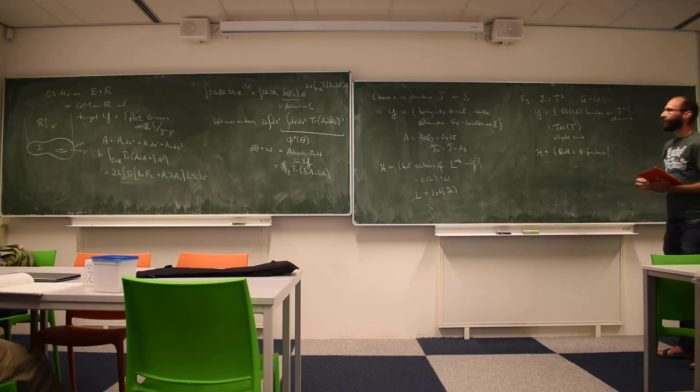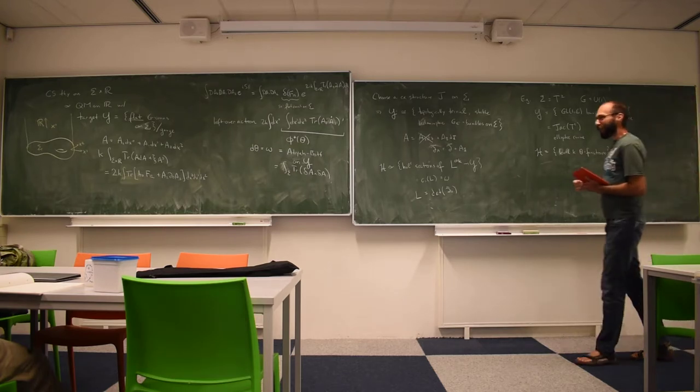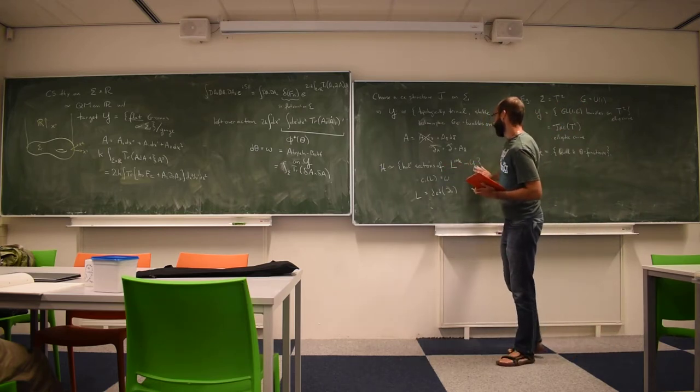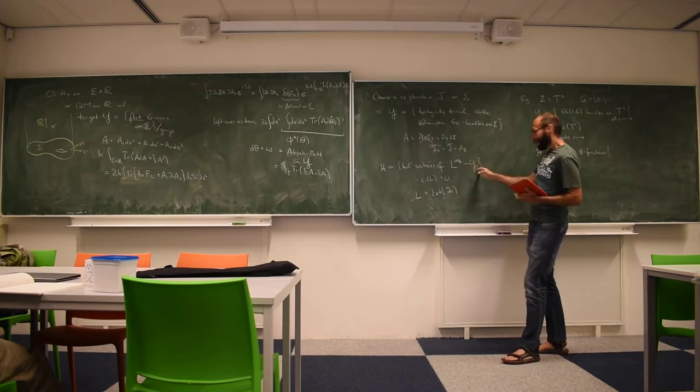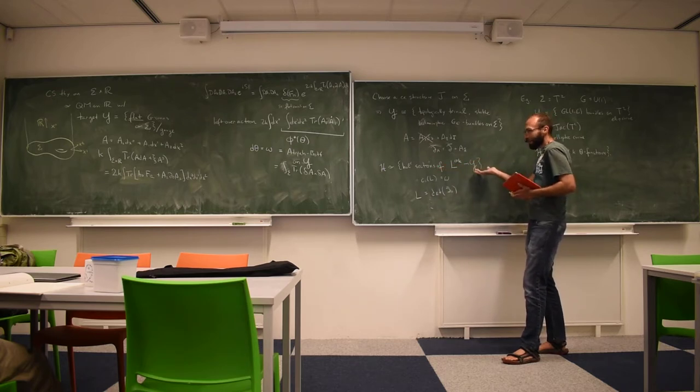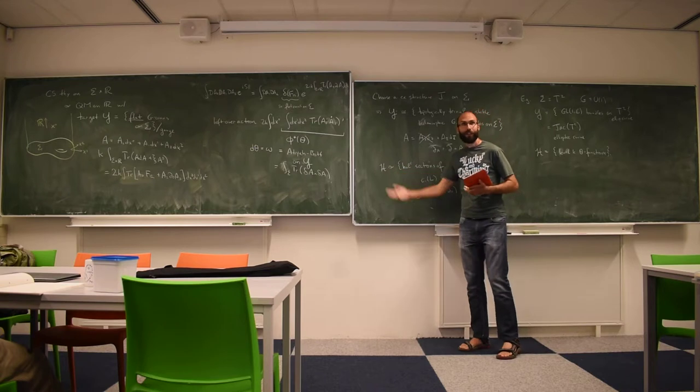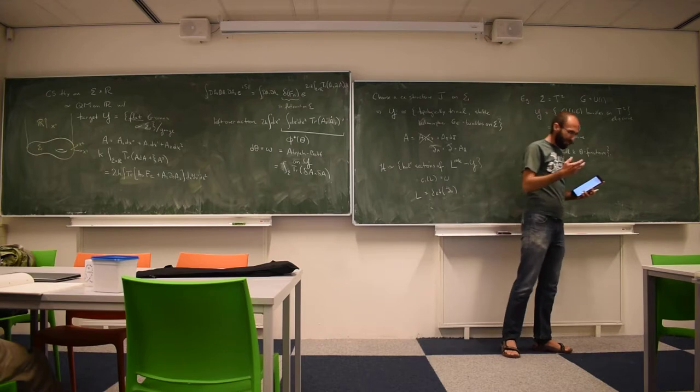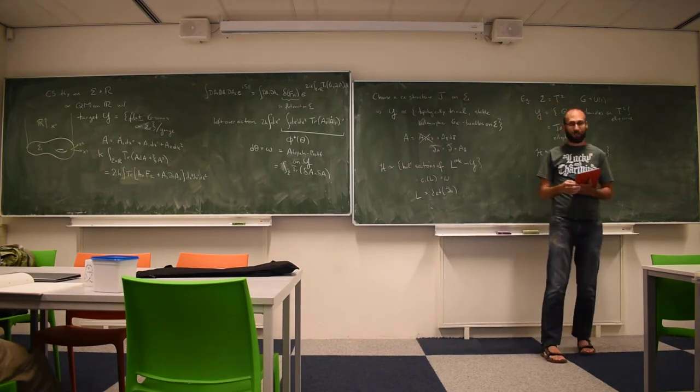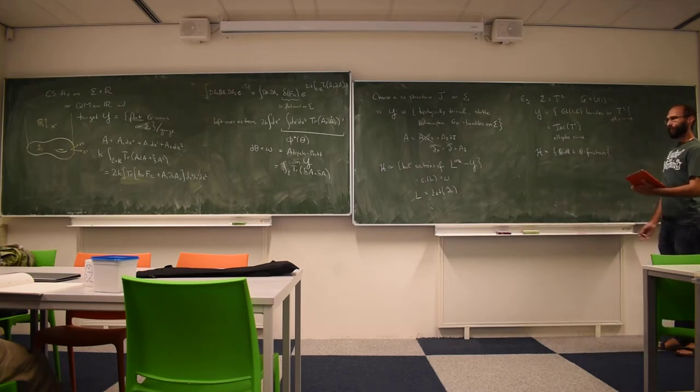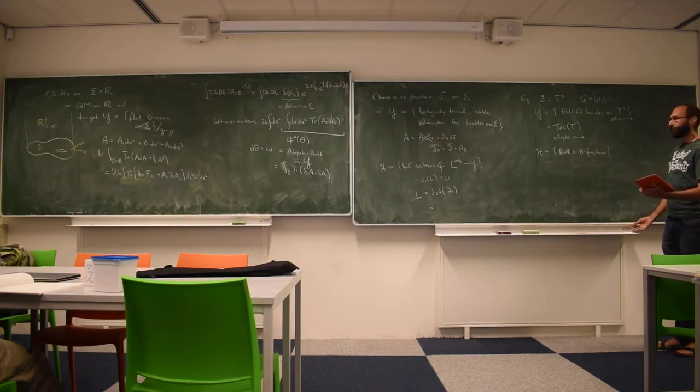As a side note, I should say that when the group is not compact, something like SL2R, the space Y is also not compact. And taking holomorphic sections of a line bundle on a non-compact space gives me an infinite dimensional Hilbert space. And that statement is sitting at the root of a lot of the difficulties and features of doing SL2R Chern-Simons theory. If the group is compact, everything is fairly straightforward. Questions? Okay.